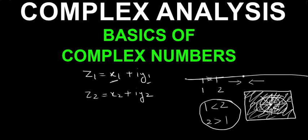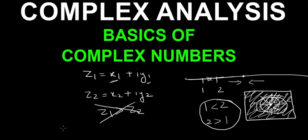But in complex numbers you cannot say this, because to reach a single point you have infinitely many ways — so you cannot say that z1 is greater than z2.